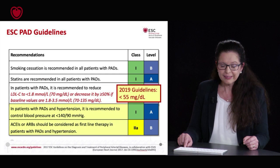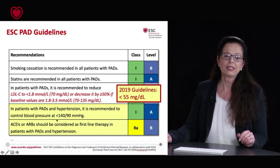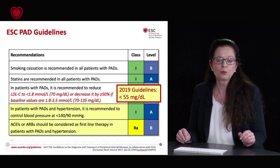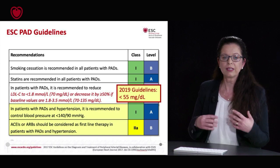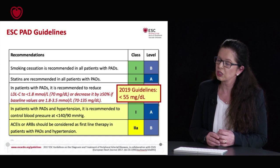For hypertension, the guidelines recommend that blood pressure in patients with peripheral artery disease and hypertension should be lower than 140/90. In LEAD patients in particular, inhibitors of the renin-angiotensin system — ACE inhibitors or ARBs — should be considered as first-line therapy.